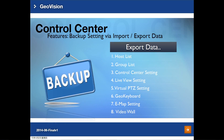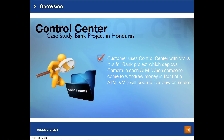Backup settings for Control Center service are available, including host list, group list, e-map settings, and video wall. With the backup function, you can restore Control Center service in a very short time. We want to share a case study about one of our clients — a bank project in Honduras. They use this project with the VMD function for Control Center monitoring, deploying cameras for ATMs. When a withdrawal occurs, the VMD will pop up the video, making it easy to check any events in front of the ATM.